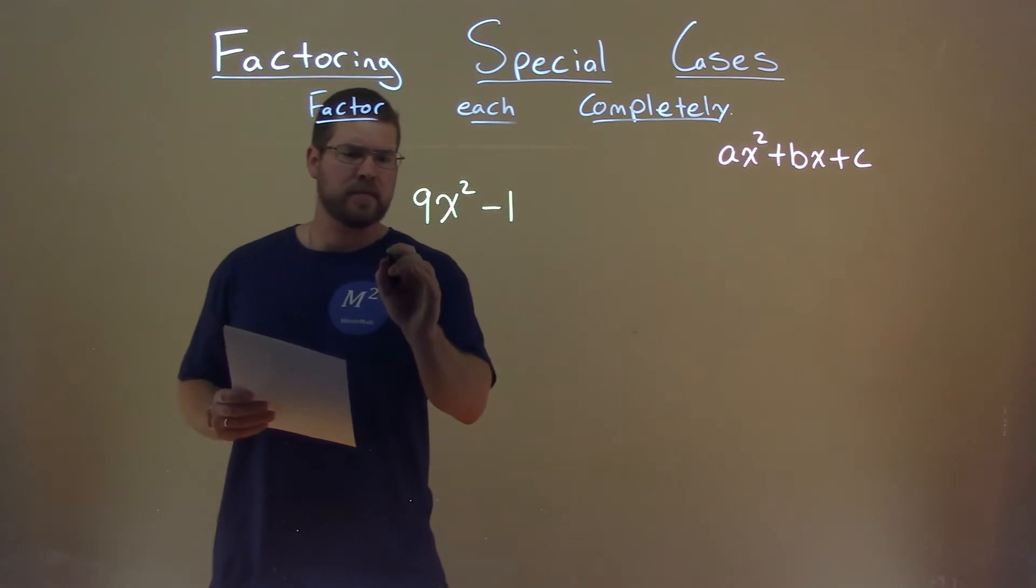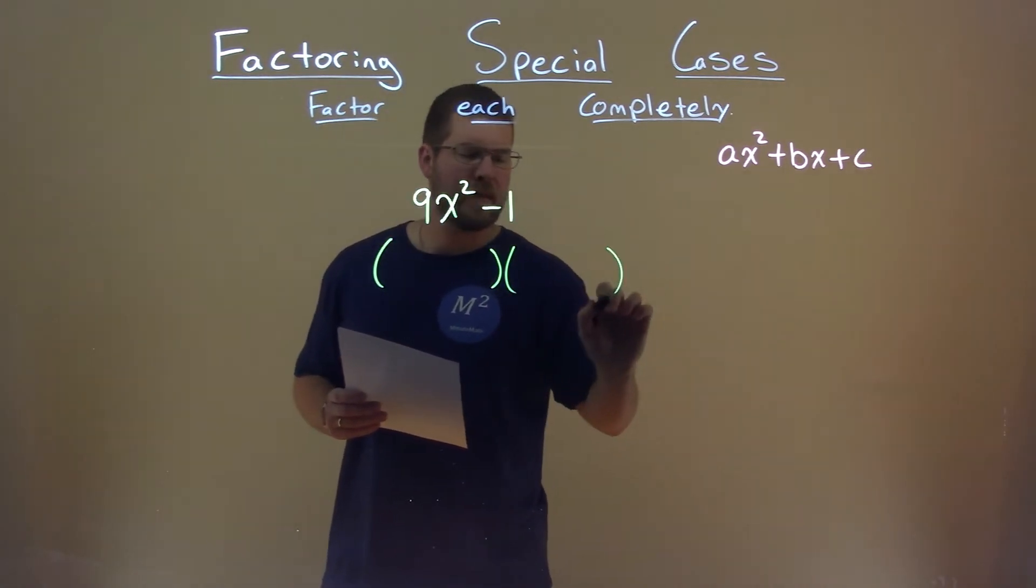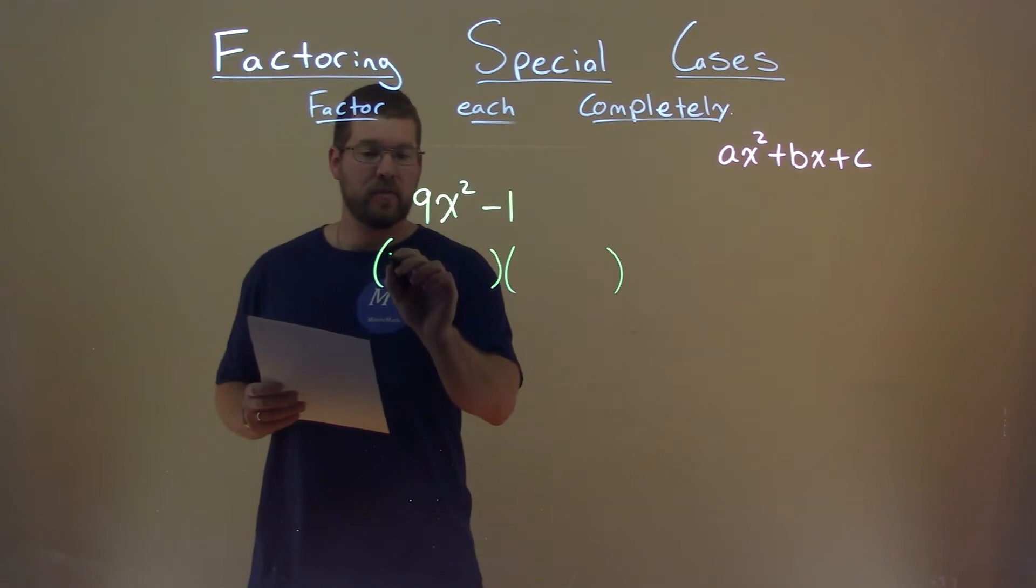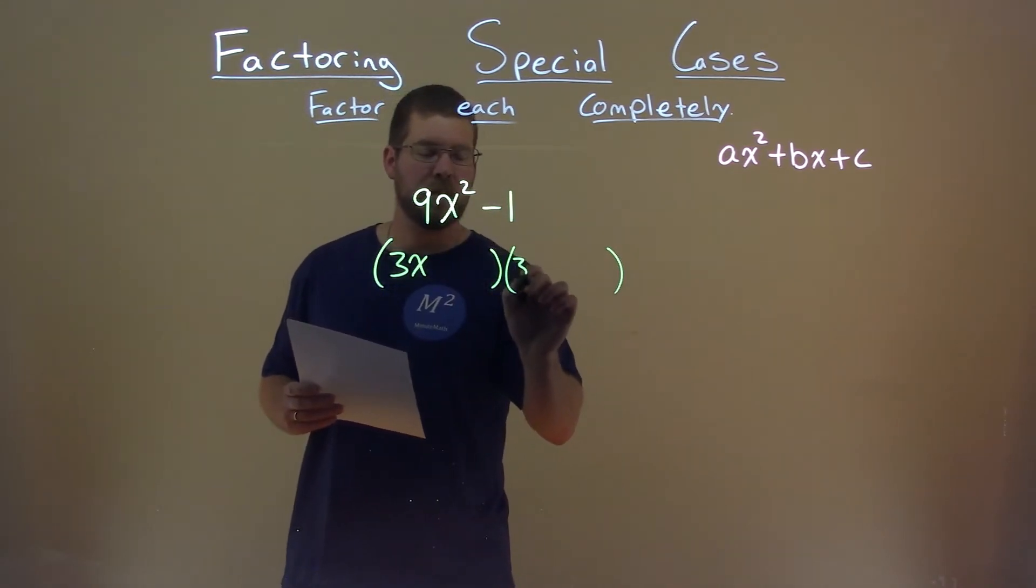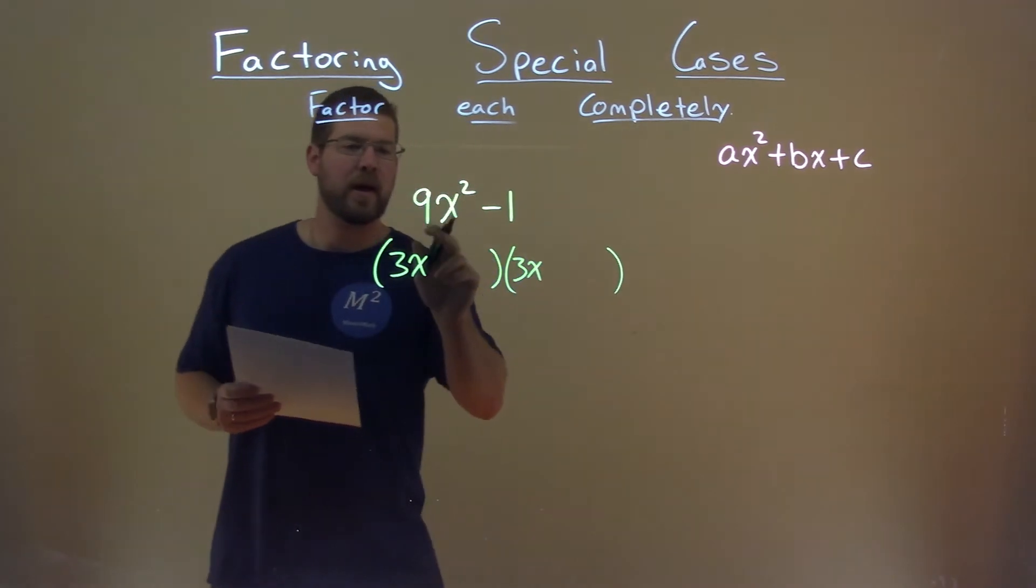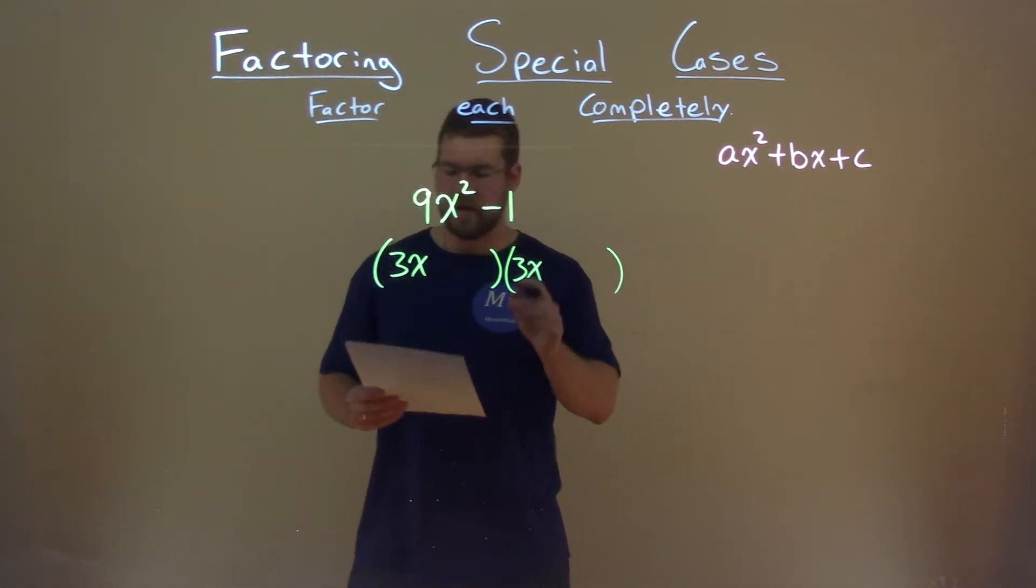So watch this. We can write this, we know it has to be in some form like that. Square root of 9 is 3, square root of x squared is x, put that here. 3x times 3x gives me 9x squared, got it.